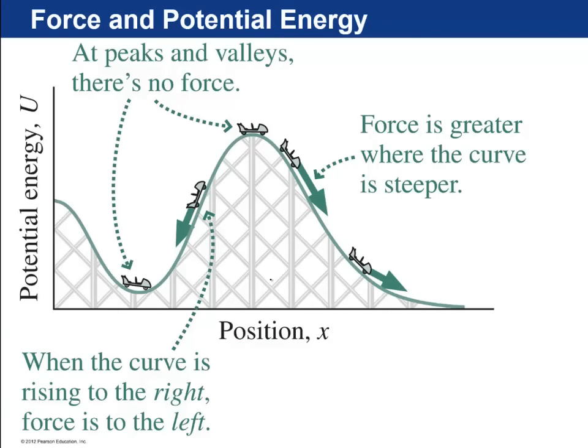The last thing in Chapter 7 is finding force from potential energy. So again, go back to that car on the roller coaster. Notice that if it's going up the hill here, then the force on it, the net force, is to the left, which if it's going to the right is slowing it down. If this potential energy is decreasing, then the net force is to the right. So the force in the x direction turns out to be the negative of the slope of the potential energy curve. So d/dx of U is the slope of this curve.